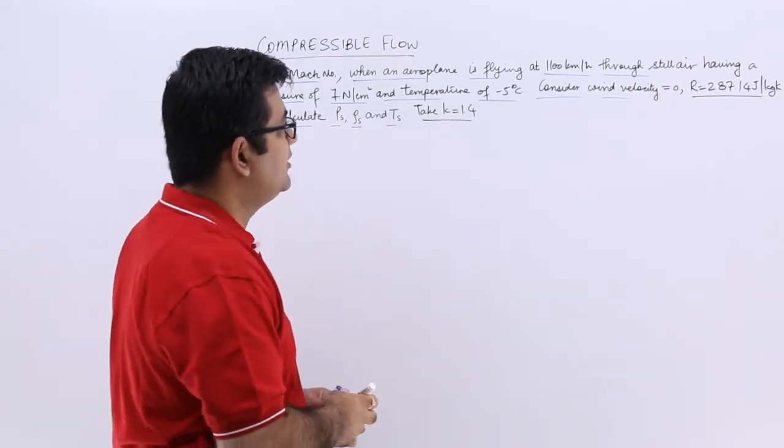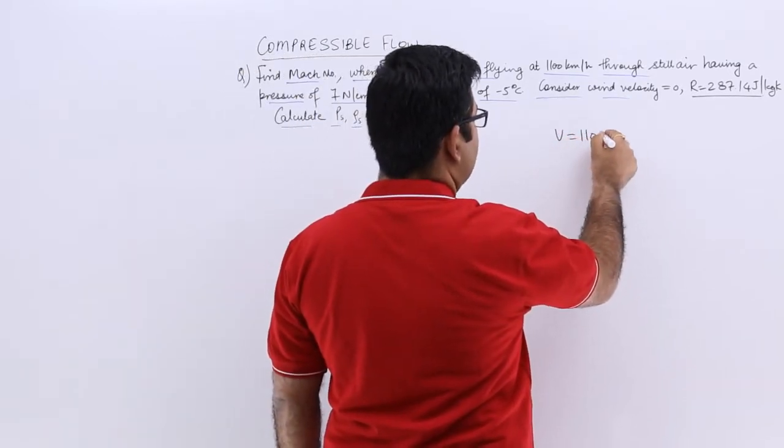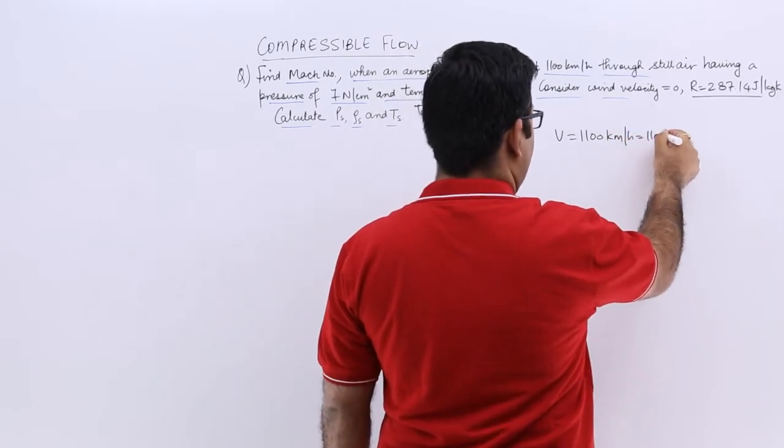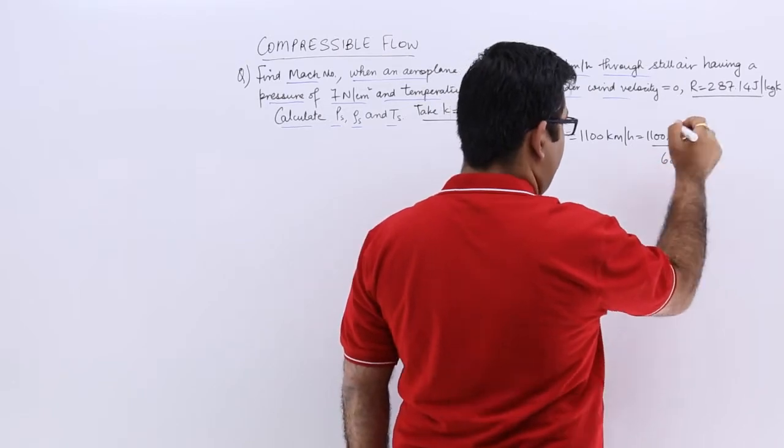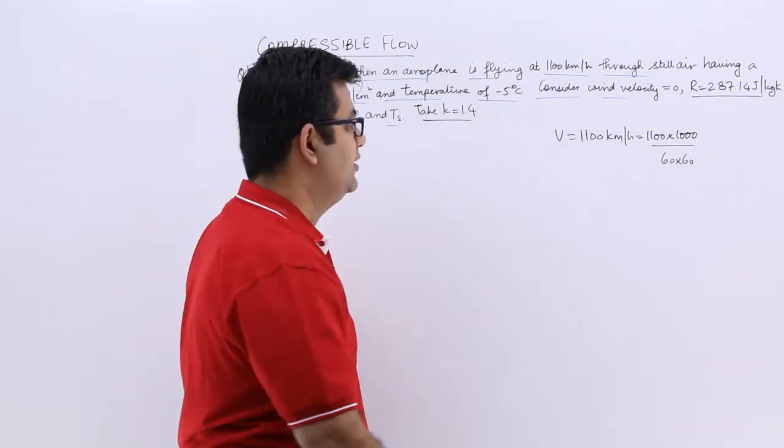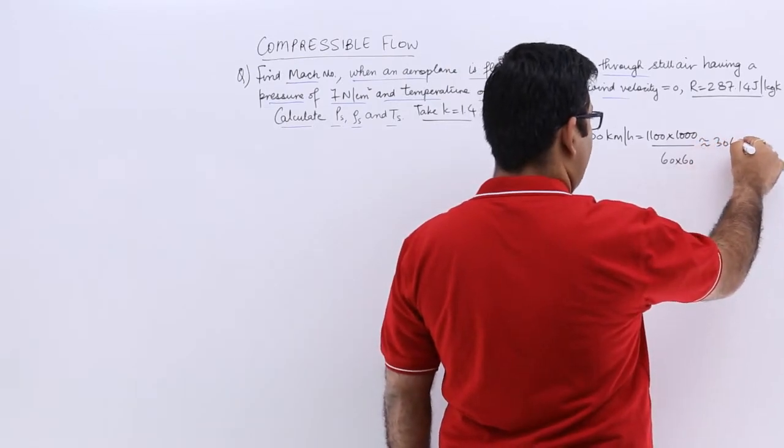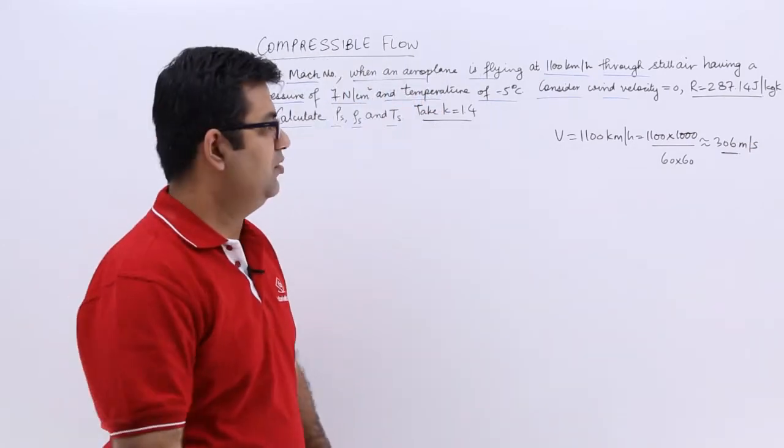Now the velocity is given to you as 1100 kmph. Let's convert this into meters per second so I'll have to multiply with 1000 and divide by 60 by 60. This would give you a value which is approximately 306 meters per second.